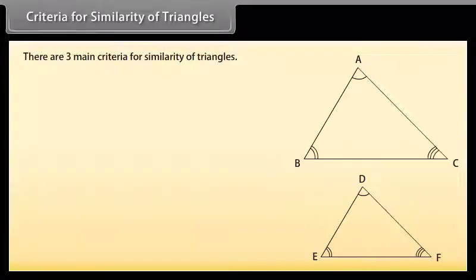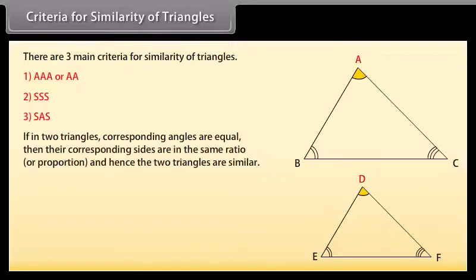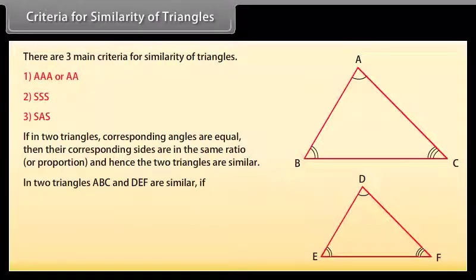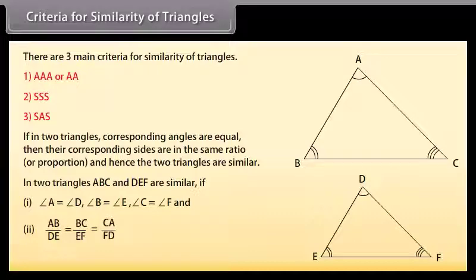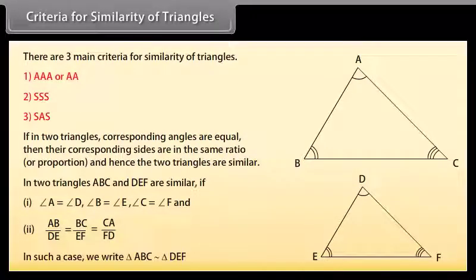Criteria for similarity of triangles. There are three main criteria: 1) AAA or AA, 2) SSS, 3) SAS. If in two triangles the corresponding angles are equal, then their corresponding sides are proportional and hence the triangles are similar. In triangles ABC and DEF: angle A = angle D, angle B = angle E, angle C = angle F, and AB/DE = BC/EF = CA/FD. In such a case we write triangle ABC is similar to triangle DEF.